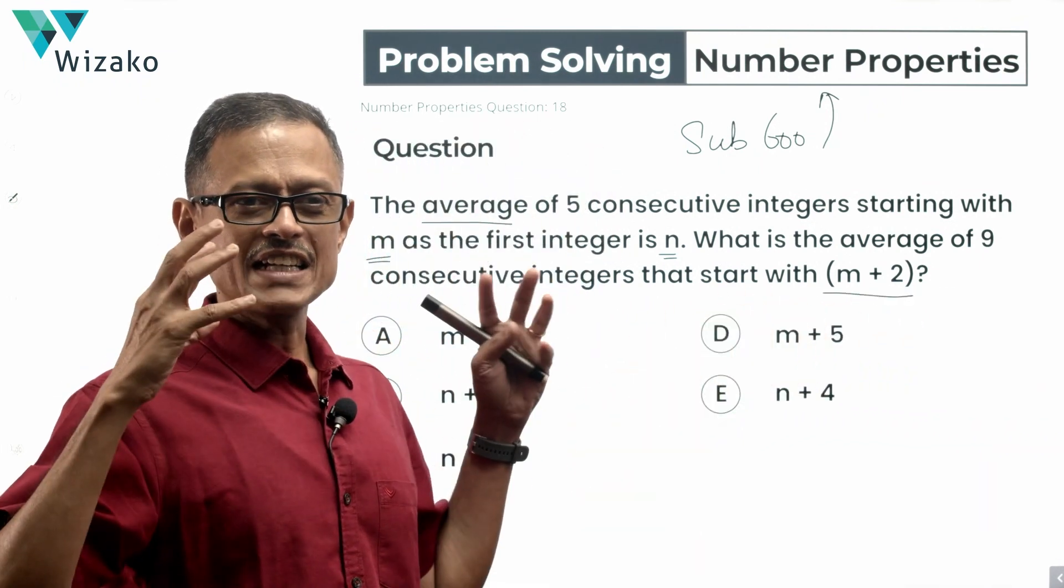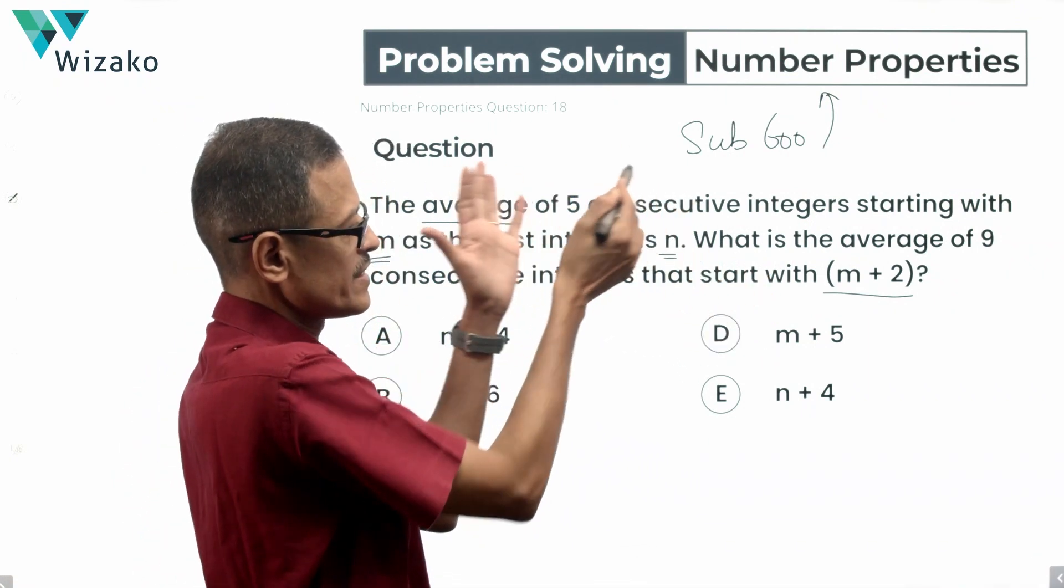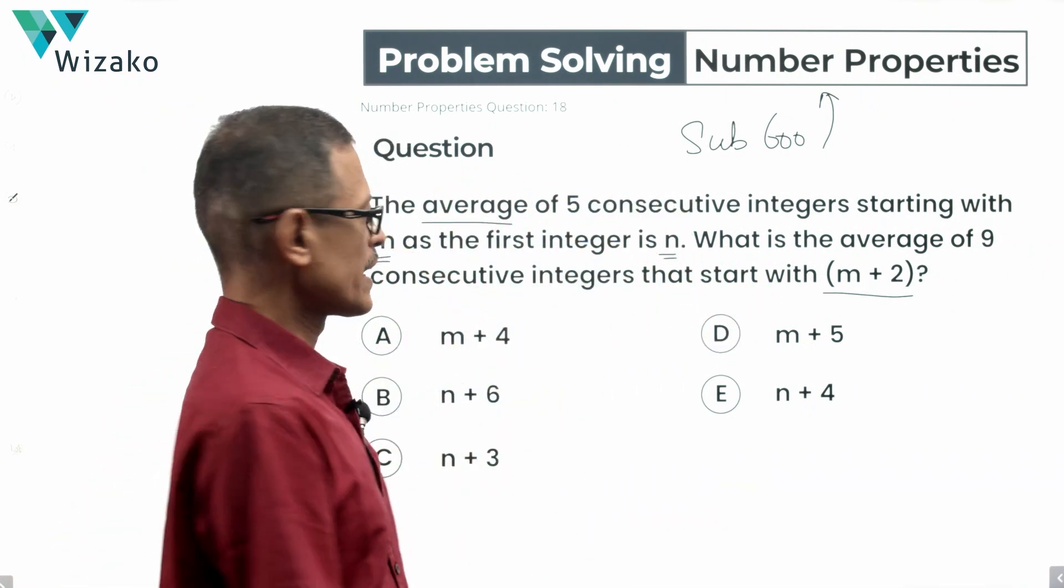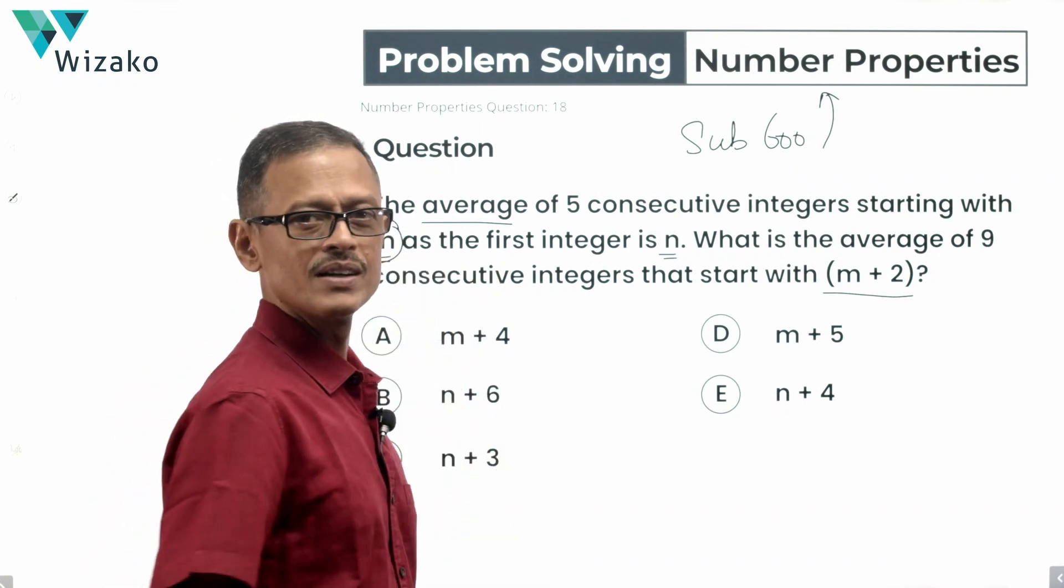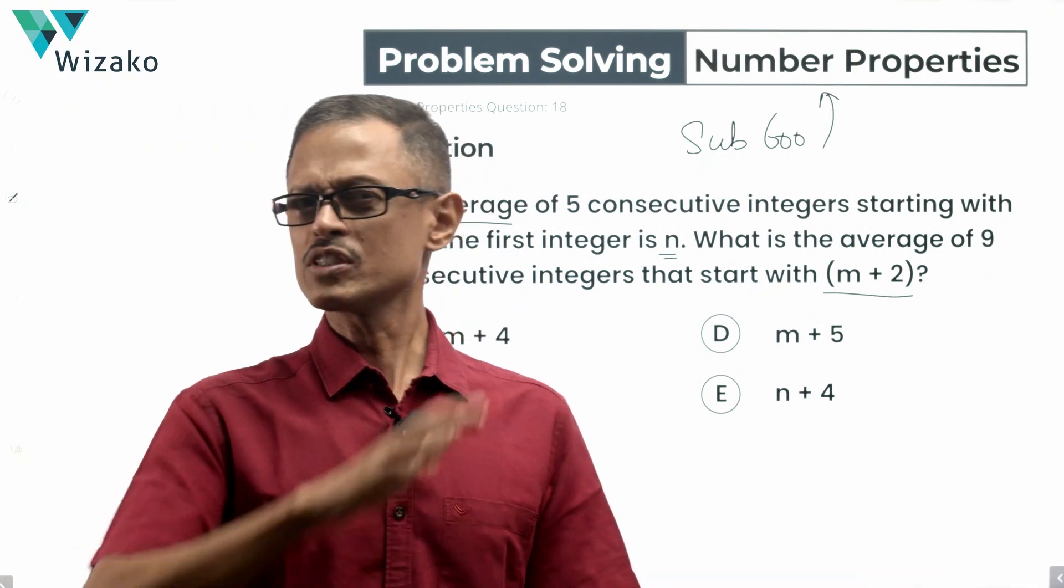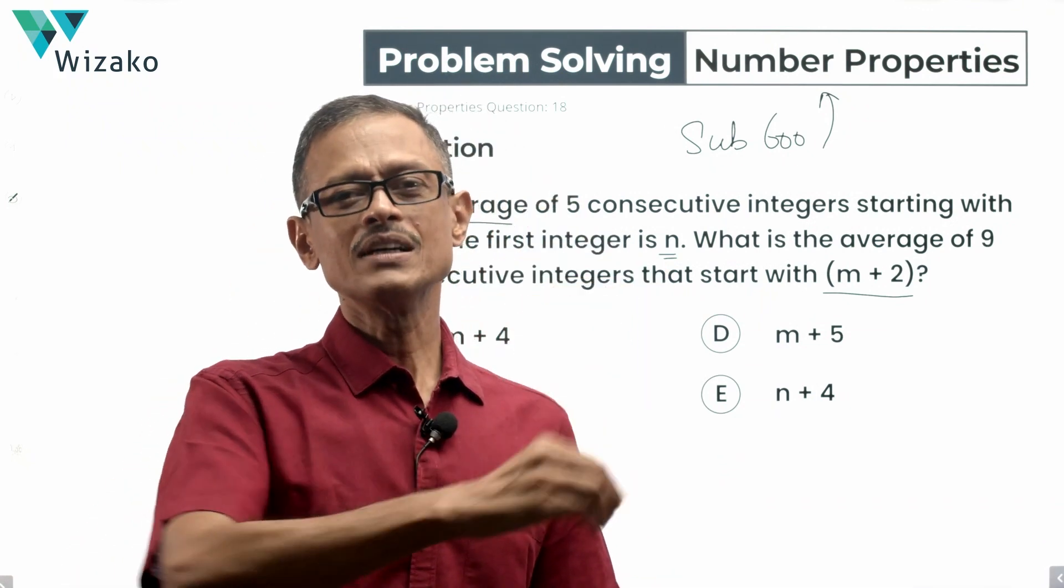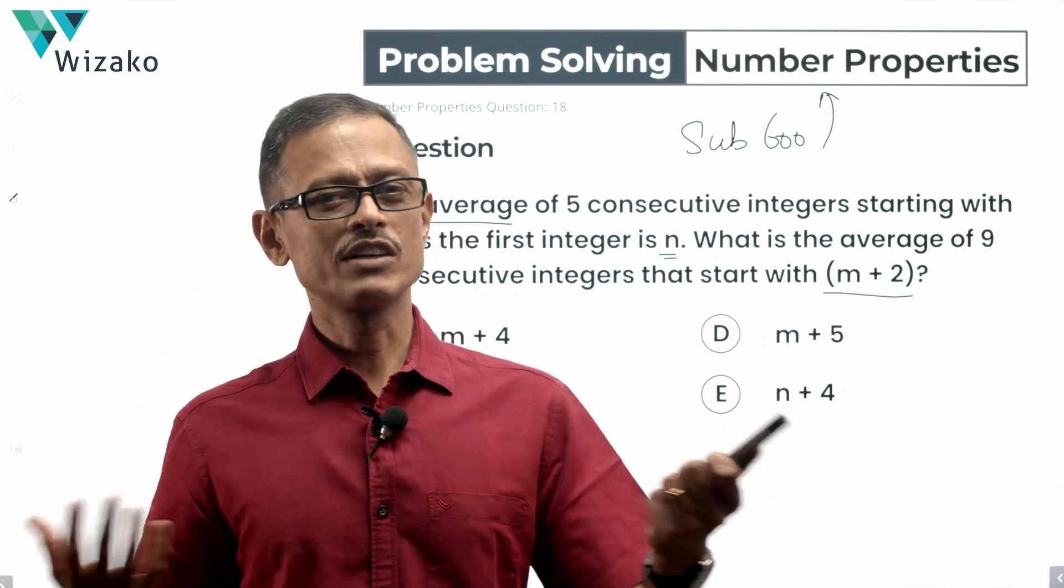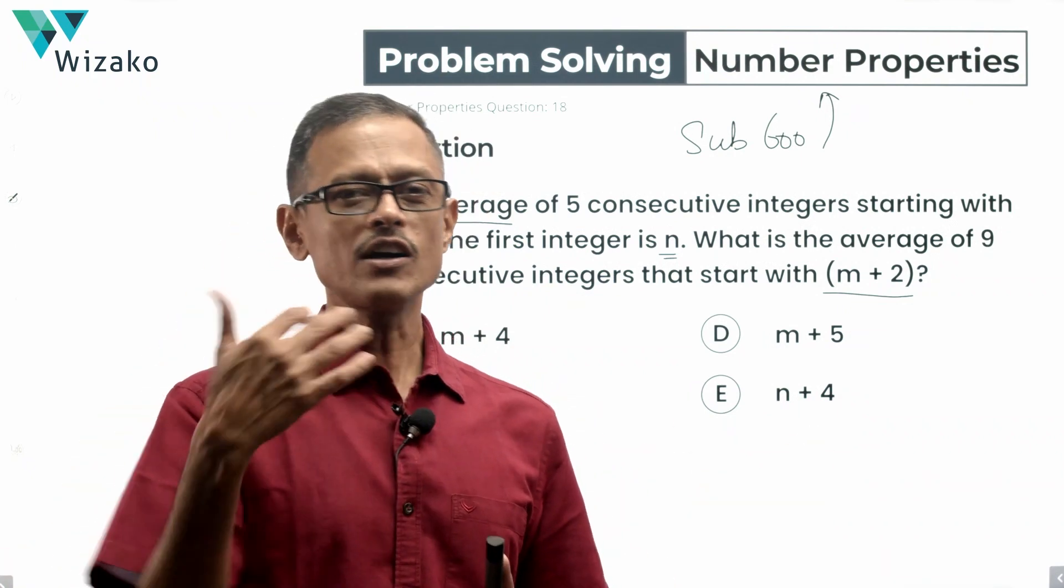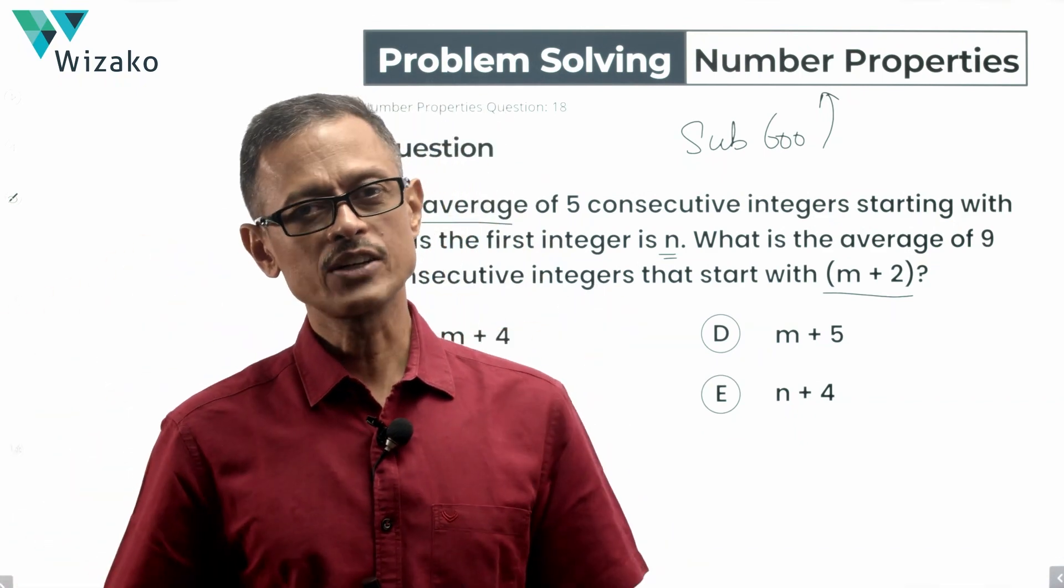Look at it. This entire question, all the terms that we are talking about, the five consecutive integers initially, the nine later on, are all related to this particular value m. So you can work with m, m plus 1, m plus 2, so on and so forth, which is not a bad thing to do. If everything is related to one particular value, to an anchor value, assign a number for it and work from it. It becomes so much easier. You will not make a mistake because you can visualize things as the numbers happen and you will be able to get to the answer quickly.